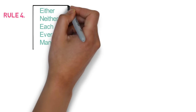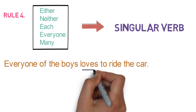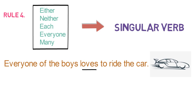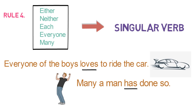Rule number 4 says: words like either, neither, each, everyone, many must be followed by a singular verb. For example, 'Everyone of the boys loves to ride the car.' We have used singular verb LOVES because the word EVERYONE is used. Another example: 'Many a man has done so.' We have used singular verb HAS because the word MANY is used. So this is Rule 4: words like either, neither, each, everyone, many must be followed by a singular verb.